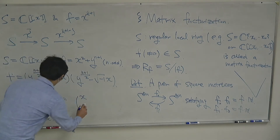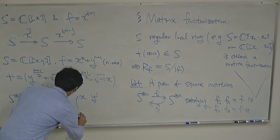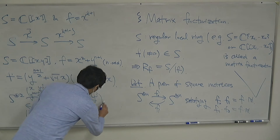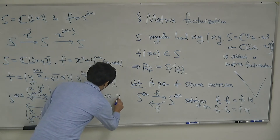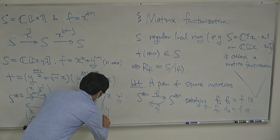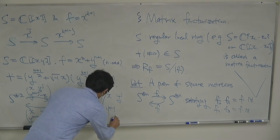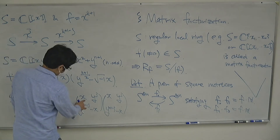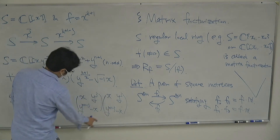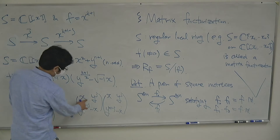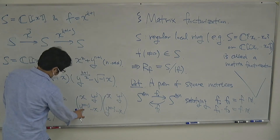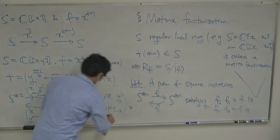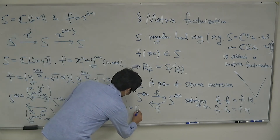One can verify: composing the 2×2 matrix with entries (x·y^j, y^(N+1-j), -x) gives x² + y^(M+1) on the diagonal and 0 off-diagonal, confirming this is F times the identity matrix.